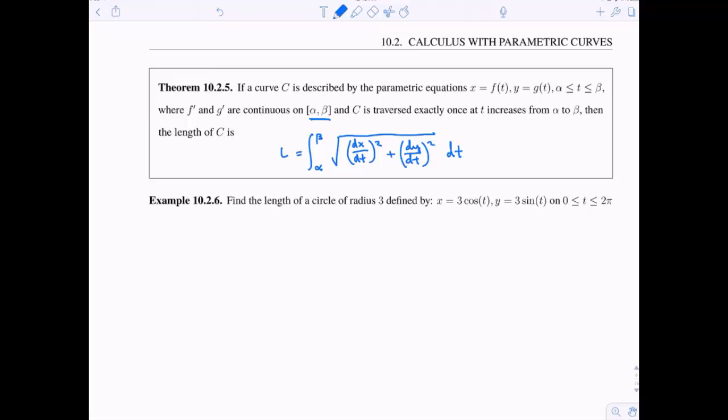So I have an example here, find the length of the circle of radius 3, defined by x equals 3 cosine t, y equals 3 sine t, on the interval from 0 to 2 pi,